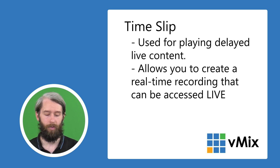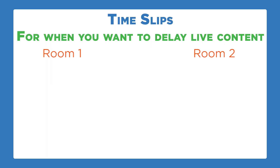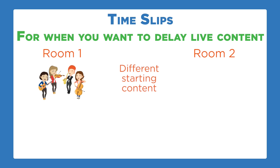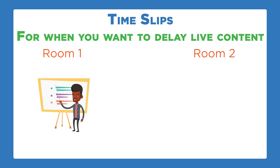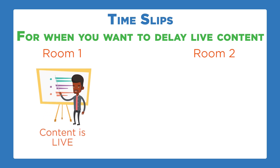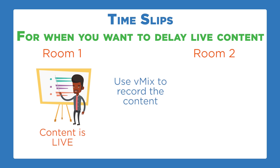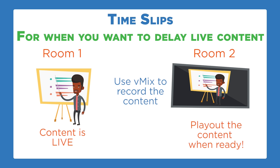Let me show you a quick example. Maybe you've got room one and room two with different content happening in them — a band in one, a different band in another, finishing at different times, but you want room one to have the same speaker as room two. In vMix, you could have everything in room one totally live, use vMix to record that content, and when room two is ready — maybe five or ten minutes later — just play the recorded content over in room two.